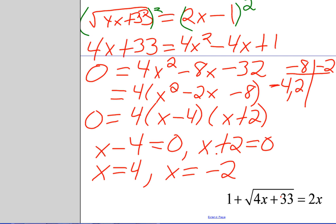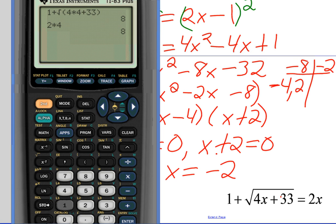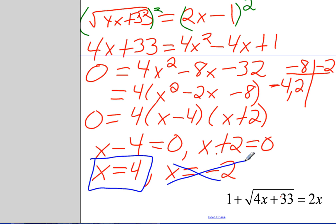So my first solution is correct. This is a true solution. Let's check the other one. So I have 1 plus the square root of 4 times negative 2 plus 33, which equals positive 6. Did I do that right? I'm going to give 2 plus 33. All right, it looks like I did it right. All right. Is that equal to 2 times negative 2? 6 is not equal to negative 4. So therefore, this is not a solution. So always check for extraneous solutions.